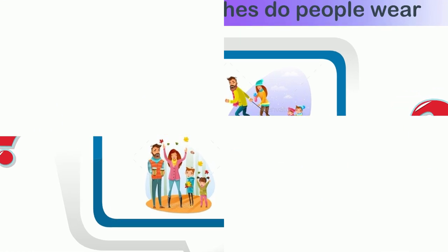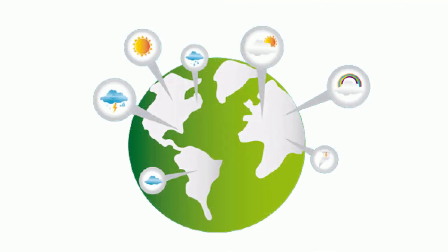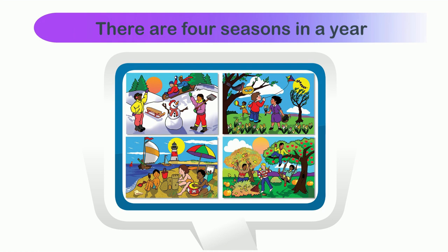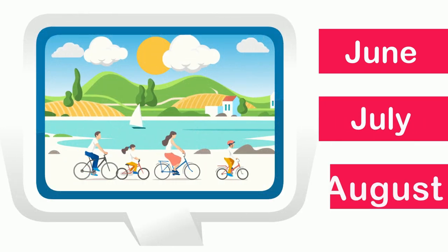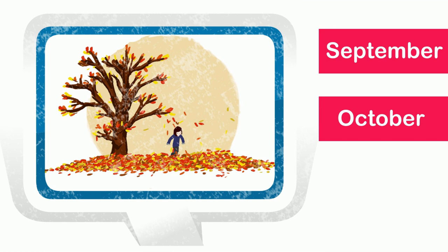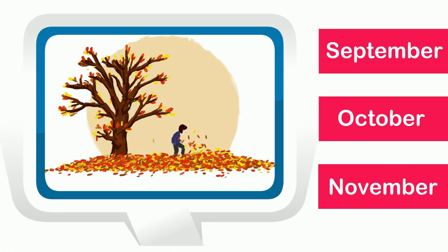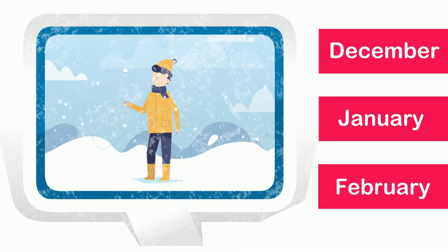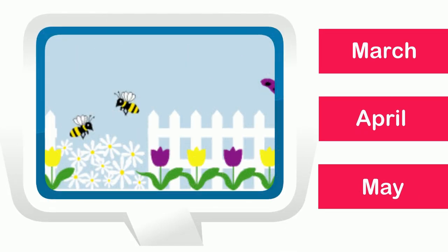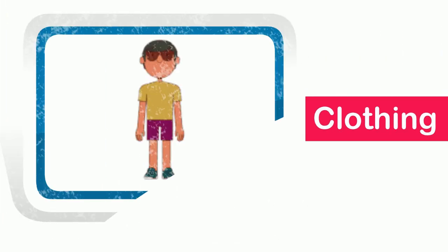We learned a little about the seasons in Class 1, so we know there are four seasons in a year. The months of each season are: June, July, and August for summer; September, October, and November for autumn; December, January, and February for winter; and March, April, and May for spring.